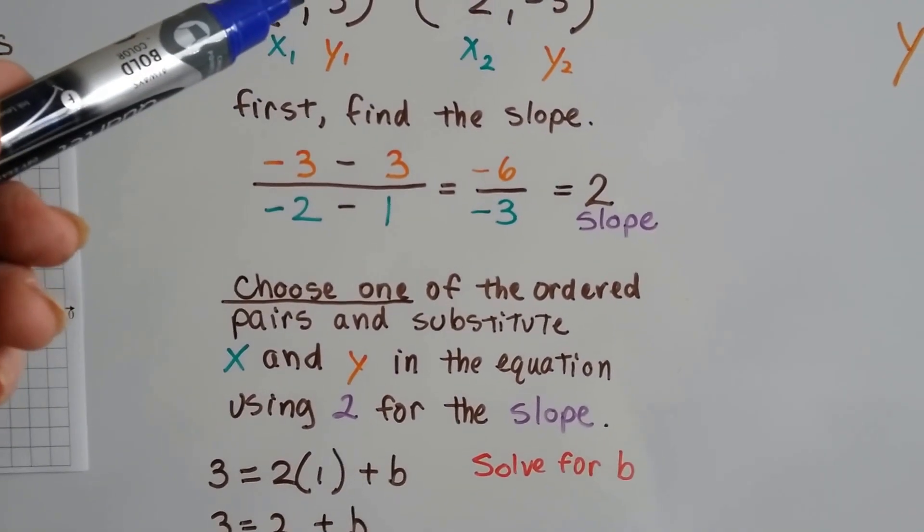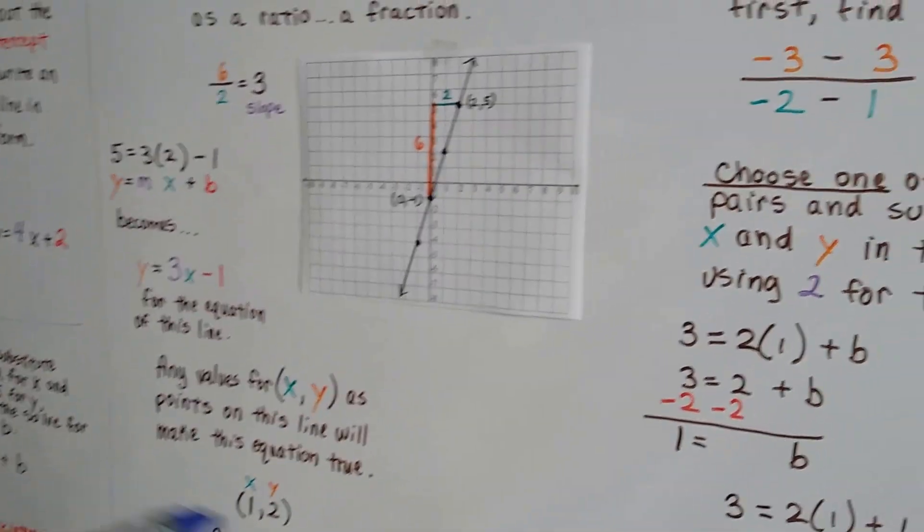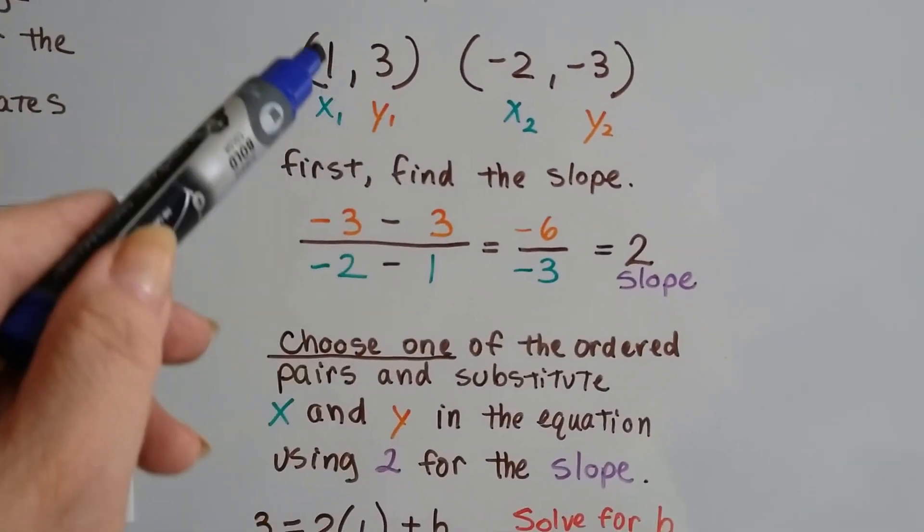And we substitute its x and y values in the equation using 2 for the slope. So we're going to substitute this and 2 for the slope and do the same thing we did with this one. Because we had the slope and one point. Now we've got the slope and we choose one point.